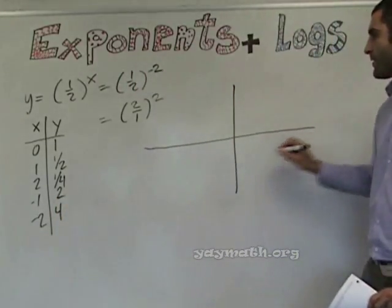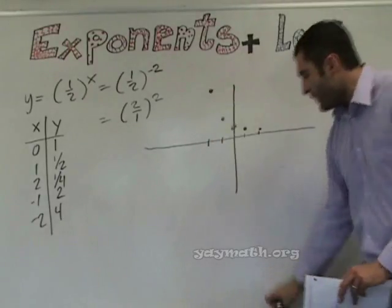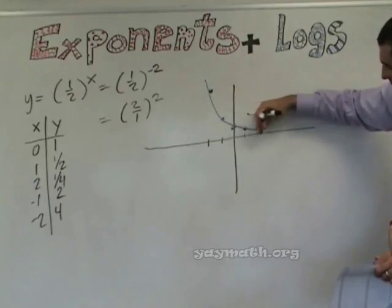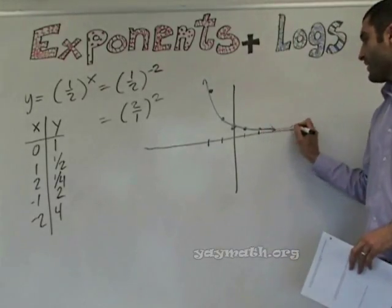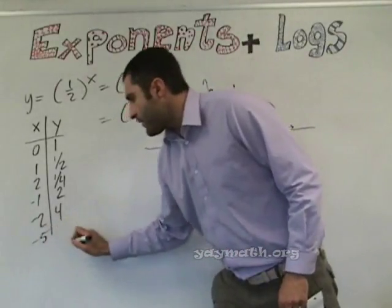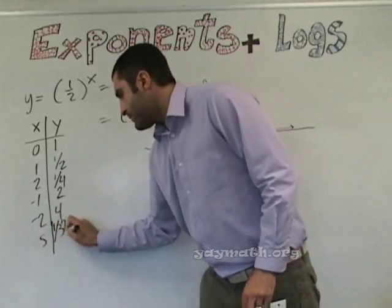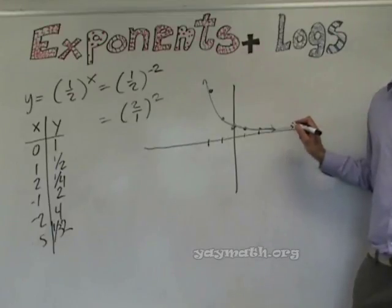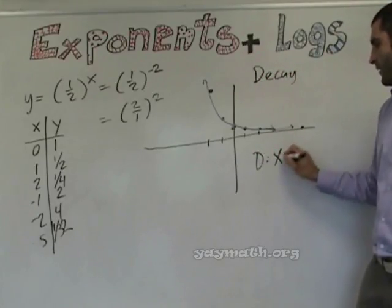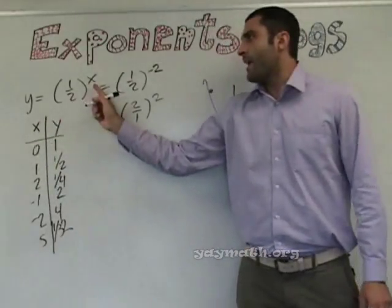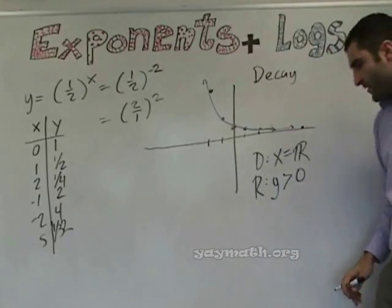Graph these points: zero-one, one-one-half, two-one-fourth, negative-one-two, negative-two-four. The graph has a slope going down — it's exponential decay. It'll never hit Y equals zero; for example, at X equals five, Y would be one over 32, really close but never touching. Does this graph have growth or decay? Decay. The domain is all real numbers, and the range is Y greater than zero.